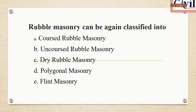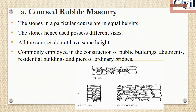Rubble masonry can be categorized into: coursed rubble masonry, uncoursed rubble masonry, dry rubble masonry, polygonal masonry, and flint masonry.